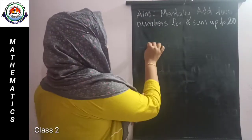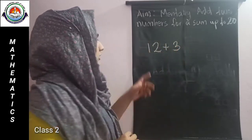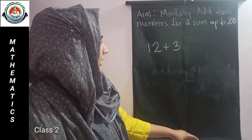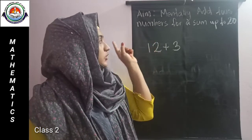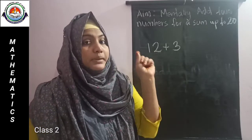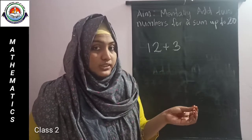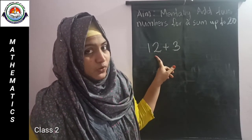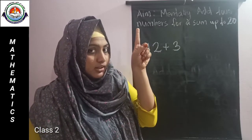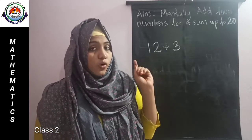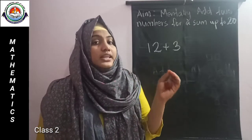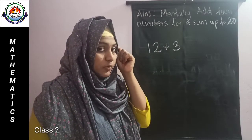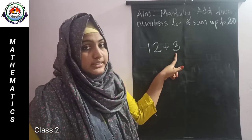Shall we do? We are going to find the sum of 12 plus 3 without drawing any place value blocks. We can count the numbers in our mind. First, you have to think about the bigger number. Which is the bigger number here — 12 or 3? Yes, 12. So think about the number 12.